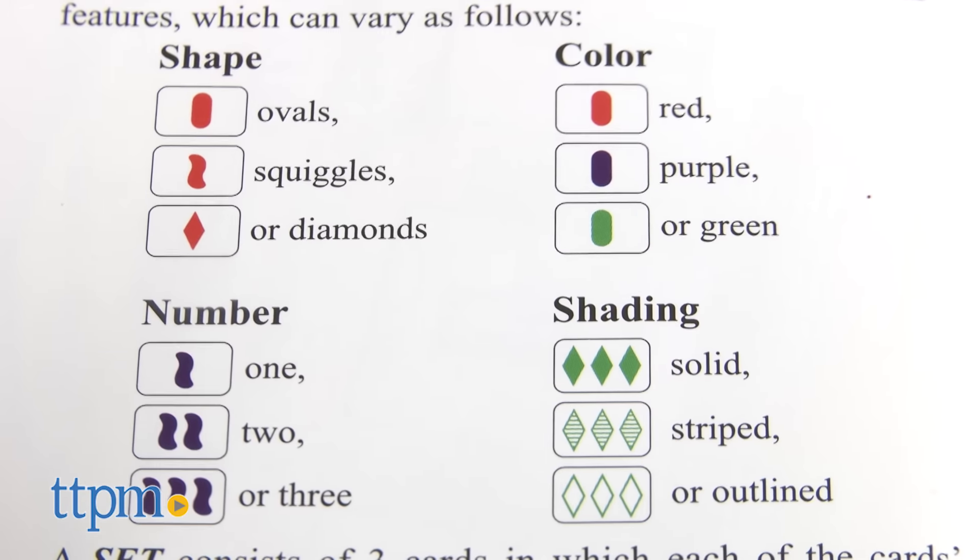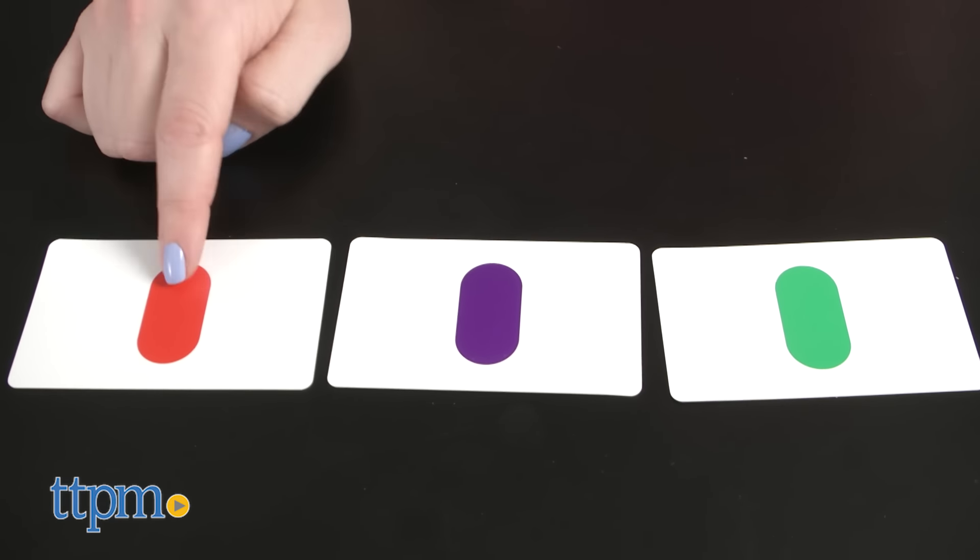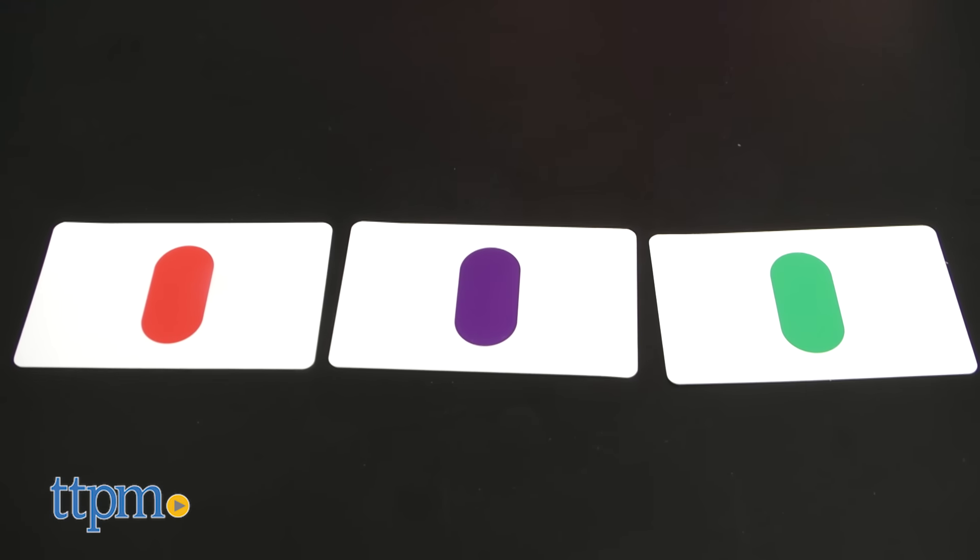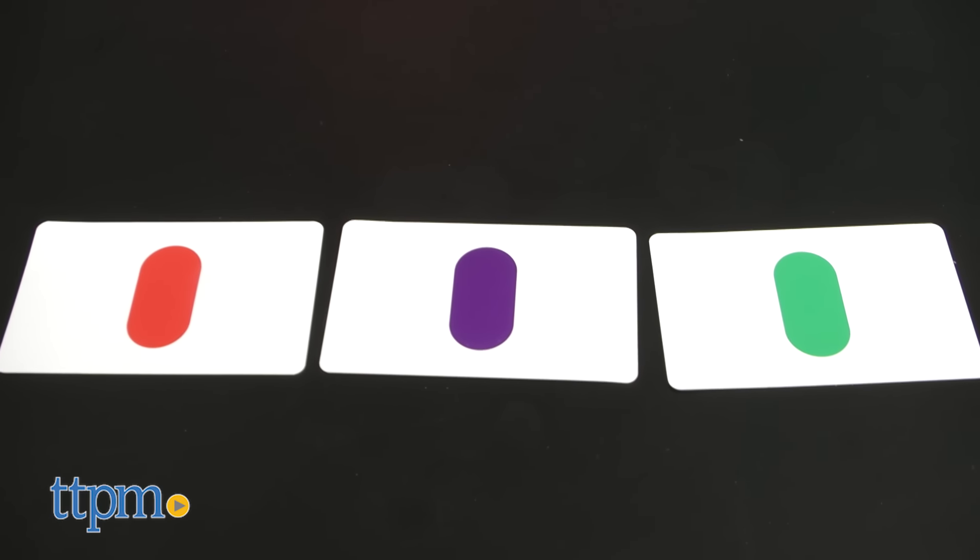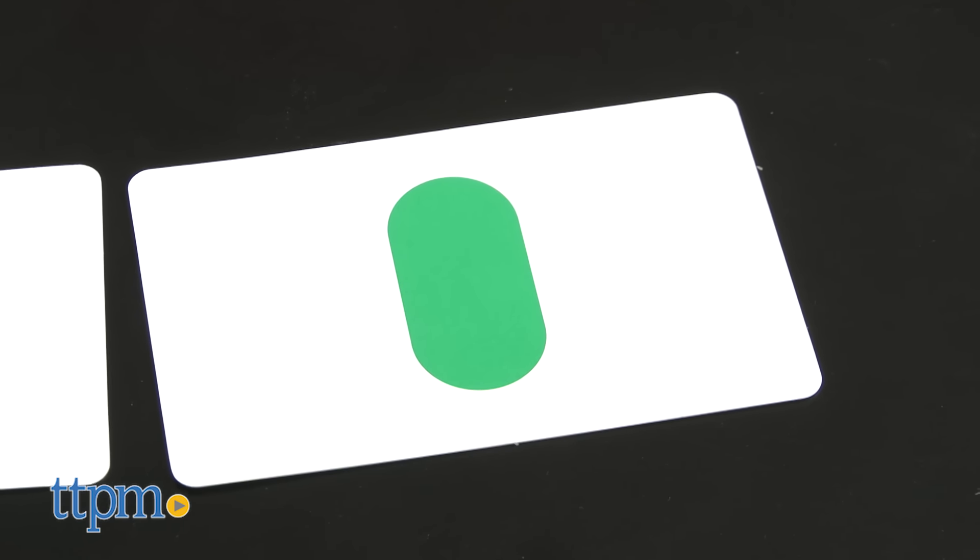So, for instance, if you have one solid red oval, one solid purple oval, and one solid green oval, that's a set because the number is all the same, one. The shape is all the same, ovals. The color is all different, red, purple, and green. And the shading is all the same, solid.